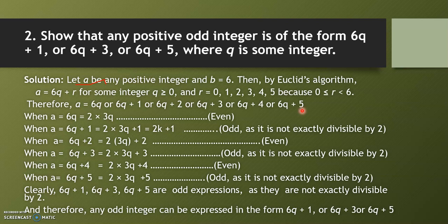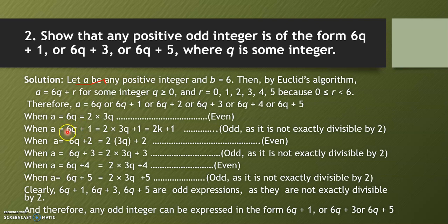Now segregate which are even and which are odd. 6q = 2 × 3q, so it is even. 6q + 1: since 6q is divisible by 2 and we add 1, it is of the form 2k + 1, which is odd. 6q + 2 = 2(3q + 1), which is even.